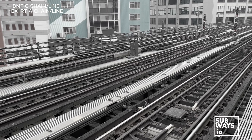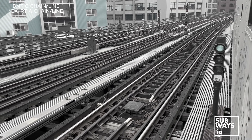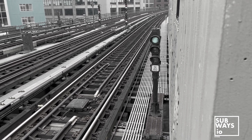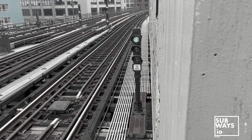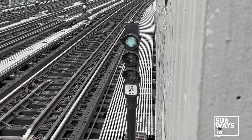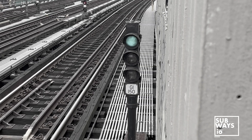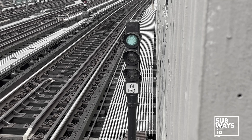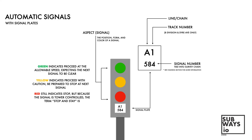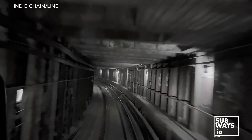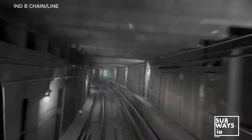Now on to the signals themselves. There are three types we're going to cover. The first is an automatic signal — a fixed signal capable of exhibiting three distinct aspects: green, yellow, or red — and is solely controlled by train movement. It also lacks an X on its signal identification plate. Green indicates proceed; yellow means proceed with caution, prepared to stop at the next signal; and red means stop. Green and yellow are considered clear signals, while red is a danger signal.